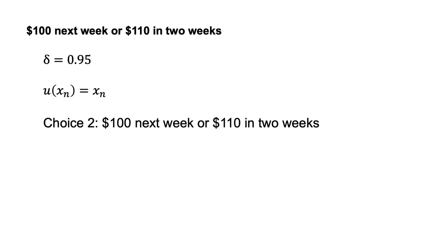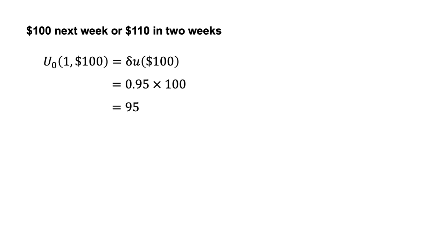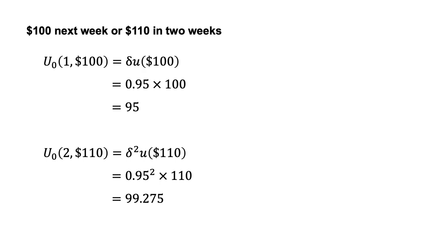Choice 2: Would Allison prefer $100 next week (t equals 1) or $110 in two weeks (t equals 2)? Again, we calculate the discounted utility of each option. The discounted utility of the $100 next week is u₀(1, $100) equals delta times u($100), which equals 0.95 times 100, which equals 95.